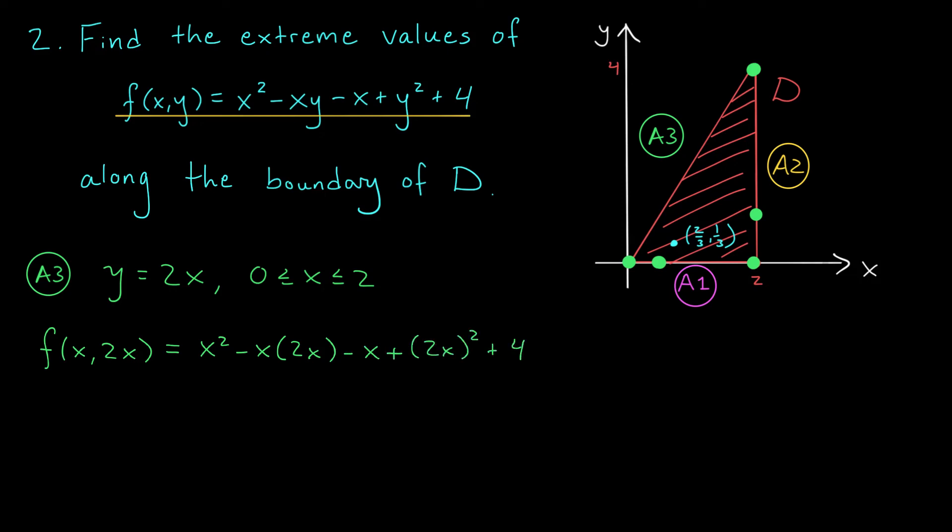If you simplify this and combine like terms, you should get 3x squared minus x plus 4. I think you know what comes next, folks. We're going to look for the critical points of our function for x between 0 and 2. We're going to throw in the endpoints, and we'll treat all of these at the end of the problem.